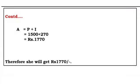Now, as you have found out the interest, that is Rs. 270, you can find out the amount. The formula for amount is A is equal to P plus I, that is principal plus interest. Your principal was 1500 plus interest is 270. So, 1500 plus 270 is Rs. 1770. So, she will get Rs. 1770.